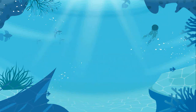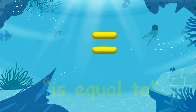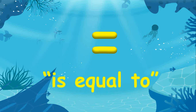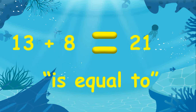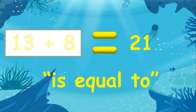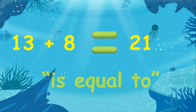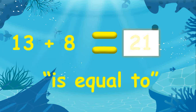The symbol equals means 'is equal to.' In 13 plus 8 equals 21, the symbol equals tells us that the value on the left is equal to the value on the right.